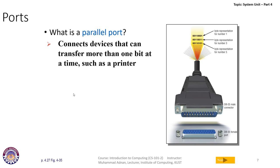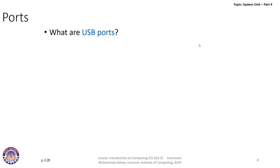A parallel port is normally faster than a serial port because it connects devices that can transfer more than one bit at a time, such as a printer. Here you can see one byte — eight bits — is transferred at a particular time, so concurrent data transmission is possible with a parallel port. If you want to transfer a large amount of data or print a huge file, you can use it for better performance compared to a serial port.